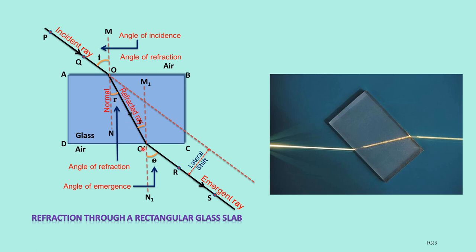After the refracted ray passes inside the glass slab and reaches the outer surface of the glass slab, it will emerge — we call this the emergent ray. Again, there is a change in medium from glass to air, and again bending of light takes place because of the change in speed of light. This ray we call the emergent ray.